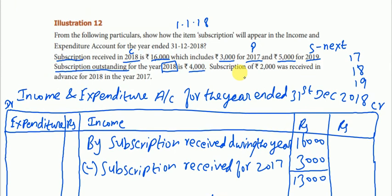Subscription of Rs.2,000 was received in advance for 2018 in the year 2017. This means in 2017, Rs.2,000 was paid in advance for the year 2018. So this Rs.2,000 belongs to the current year 2018 and must be included.